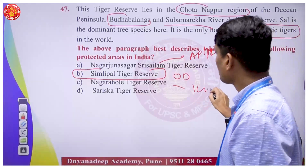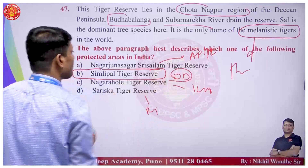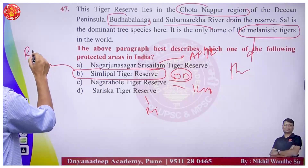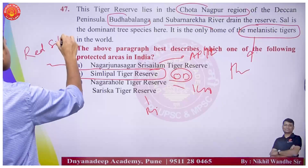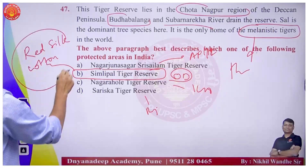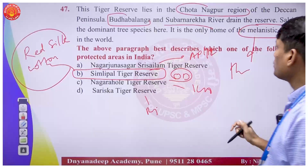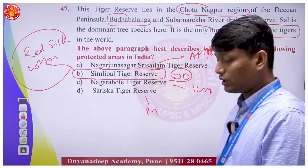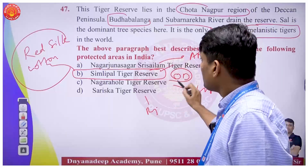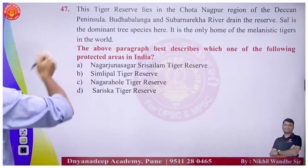Simlipal Tiger Reserve is in Odisha. It is known for a disproportionately high proportion of melanistic tigers found in that particular region. The name 'Simlipal' comes from Simli tala - red silk cotton trees found there.